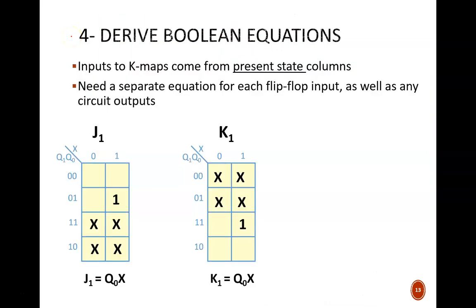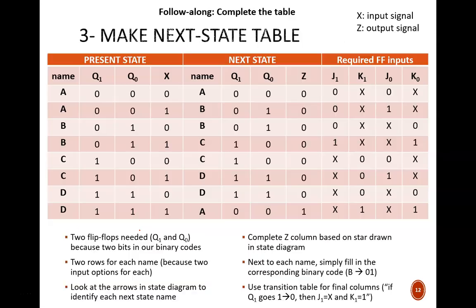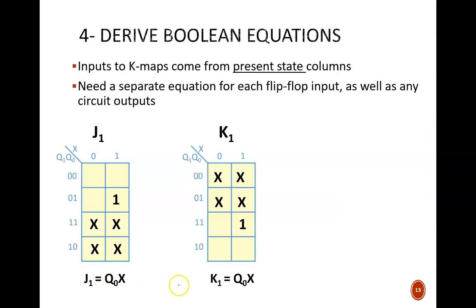Now we can perform step 4. Derive the Boolean equations for all the flip-flop inputs as well as the output Z. Always remember that the inputs to these equations come from the present state columns. The Karnaugh maps for J1 and K1 are given here. We see many Xs, which is good for two reasons. It matches what we found in the next state table. And it makes for simple final equations. Try your hand at deriving the equations for J0, K0, and Z. Pause the video while you do.